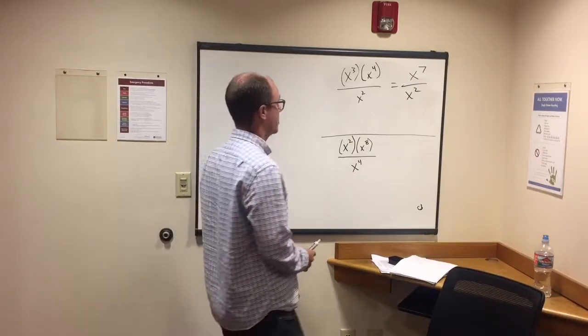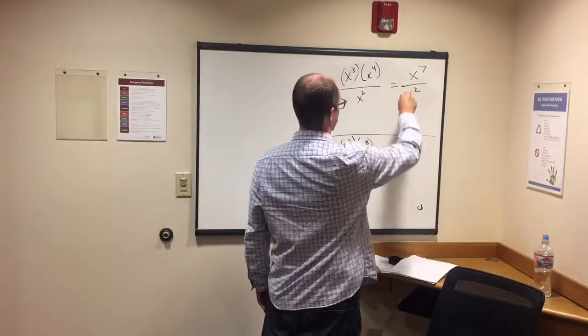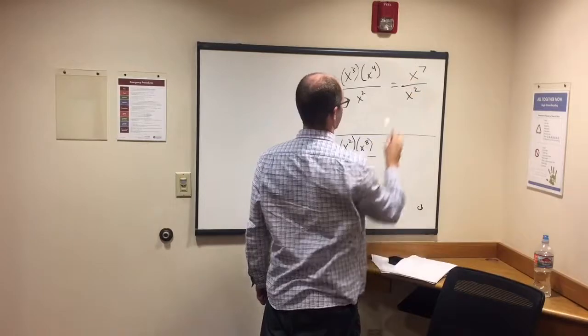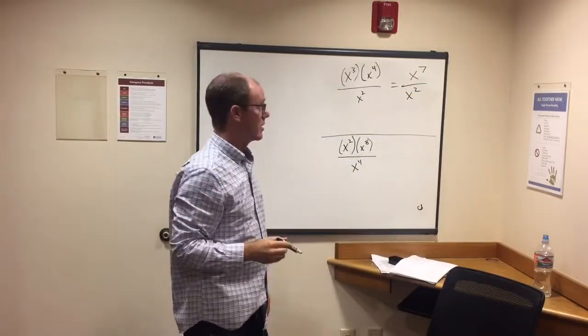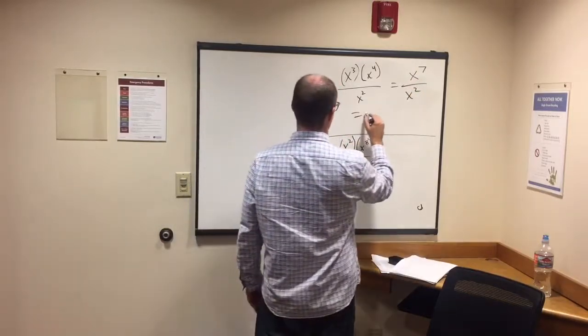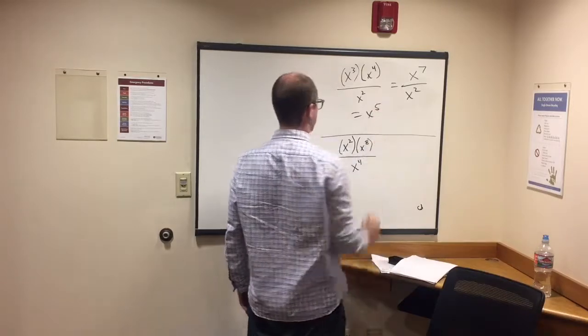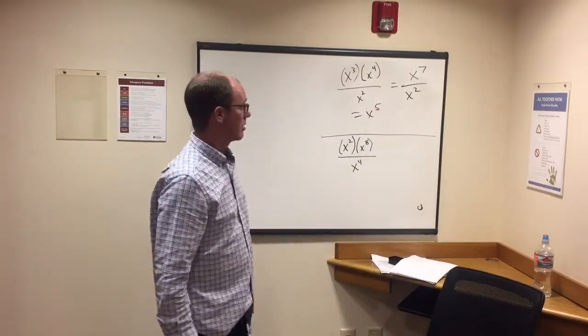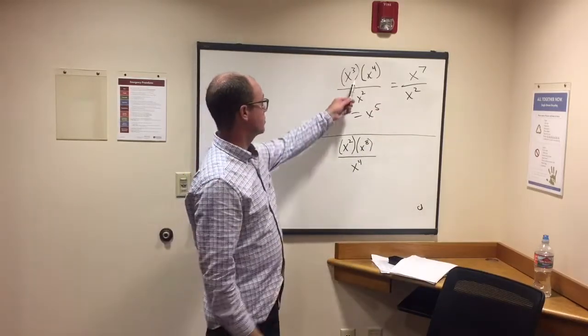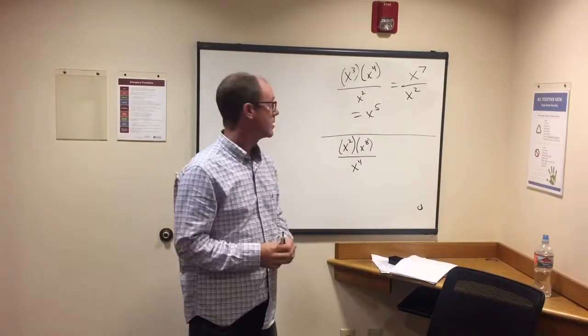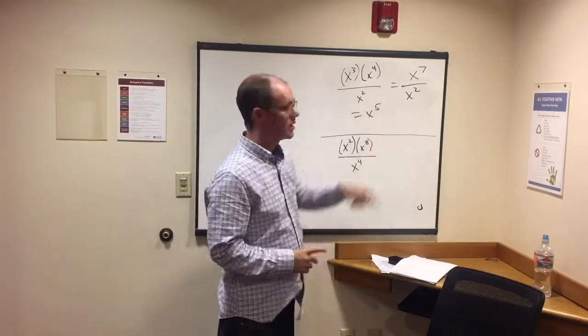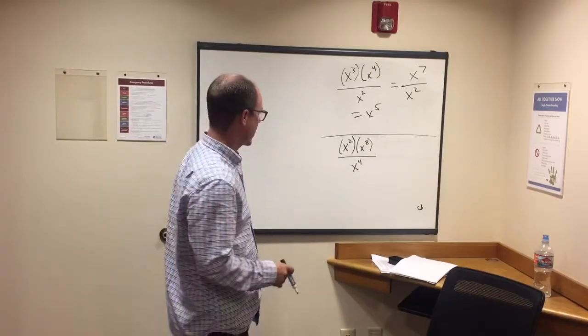And then once we get here, same base again, just x, seven minus two, then we would subtract the exponents, come up with x to the fifth. So when multiplying, you've got to add the exponents. When dividing, subtract.